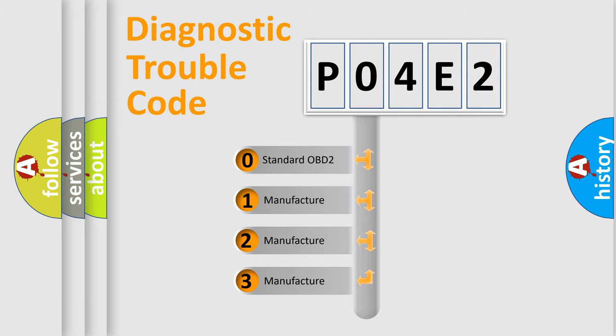If the second character is expressed as zero, it is a standardized error. In the case of numbers 1, 2, or 3, it is a manufacturer-specific expression of the car-specific error.